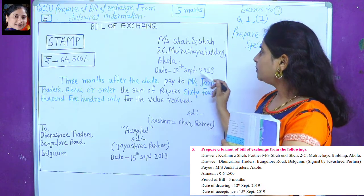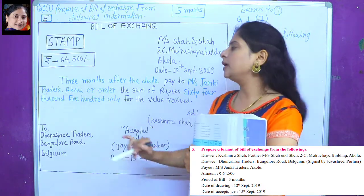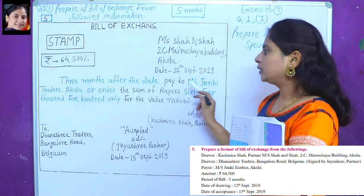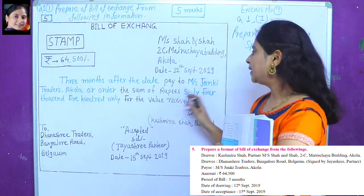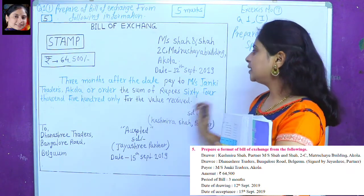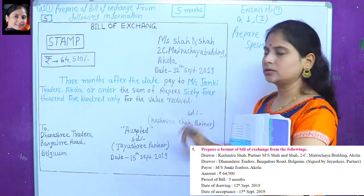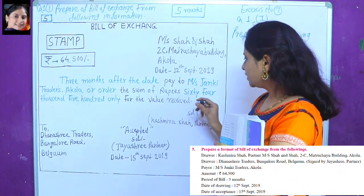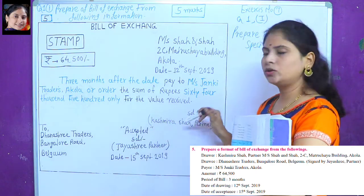2019, term 3 months after date. Name, address: Pay to Mrs. Janniki Trader, the sum of Rs. 64,500 only, for the value received.